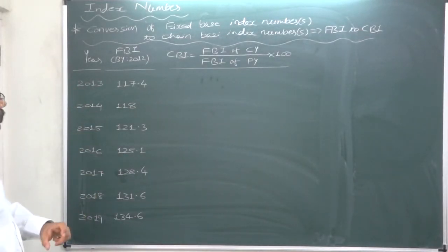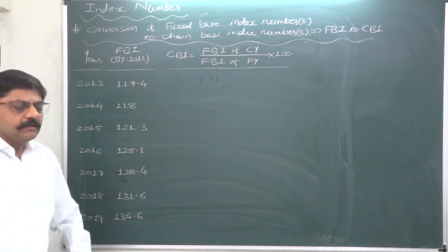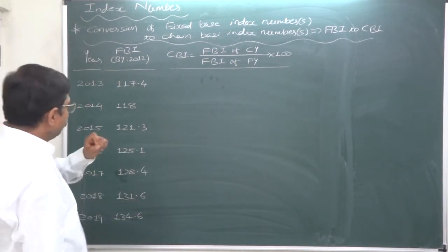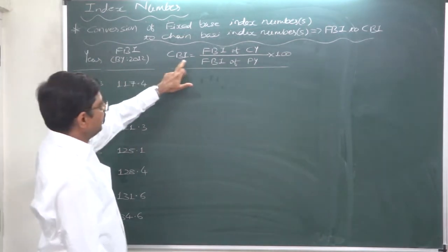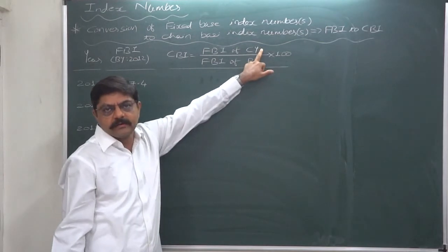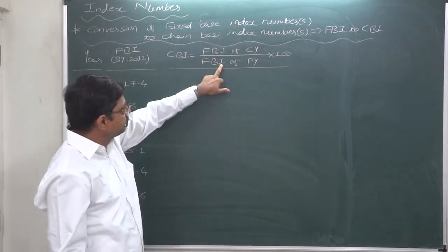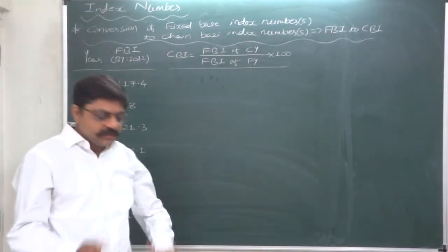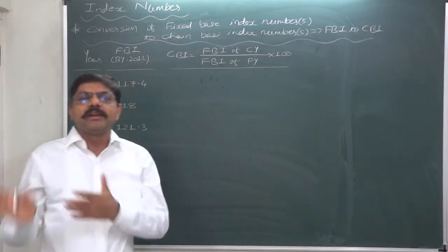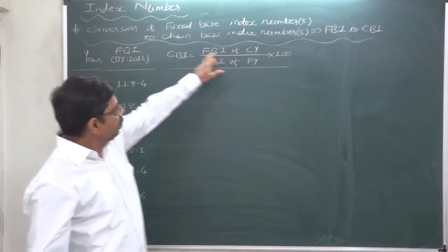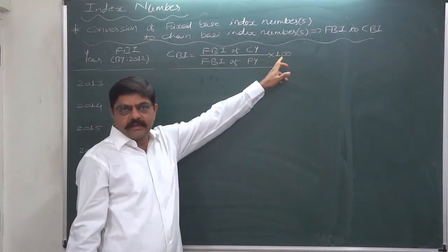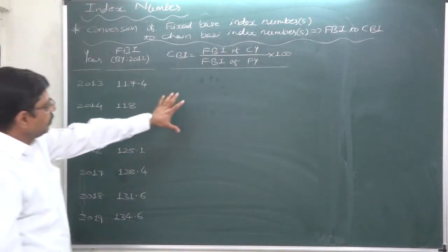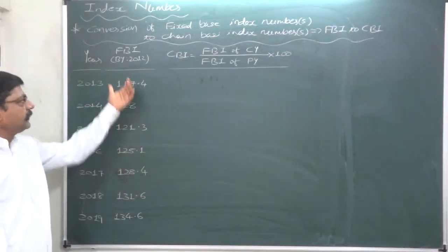To convert fixed-base index numbers into chain-based index numbers, we use a simple formula based on ratio and proportion: Chain-based index number = (Fixed base index number of current year ÷ Fixed base index number of previous year) × 100. This is like calculating any ordinary index number — dividing current by previous year value gives a ratio, and multiplying by 100 gives a percentage.